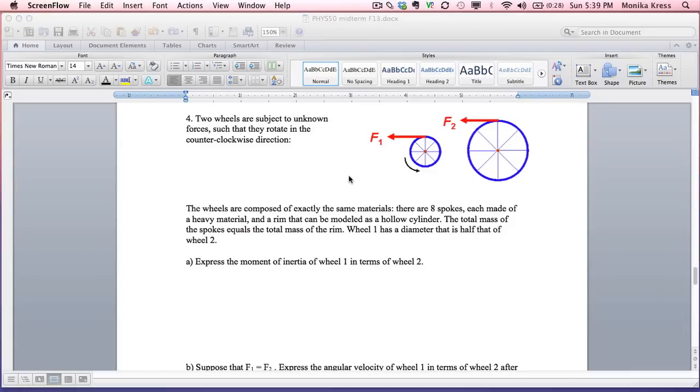Hi everybody. I've had a few requests to work through the solution to number four from our midterm on rotational motion. In problem number four we have two wheels that are identical except their radius is different.